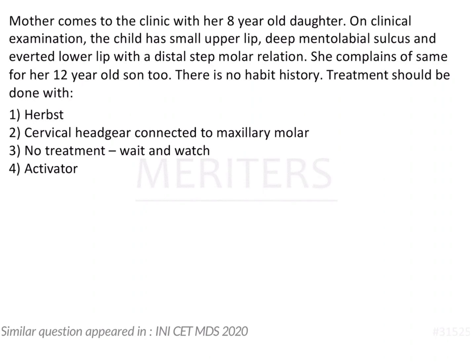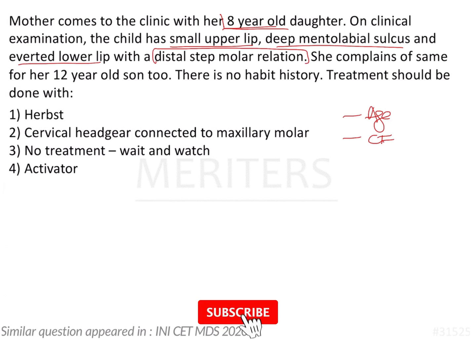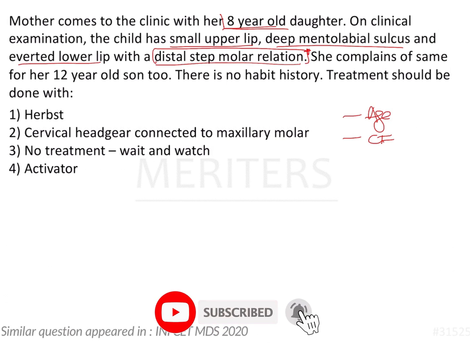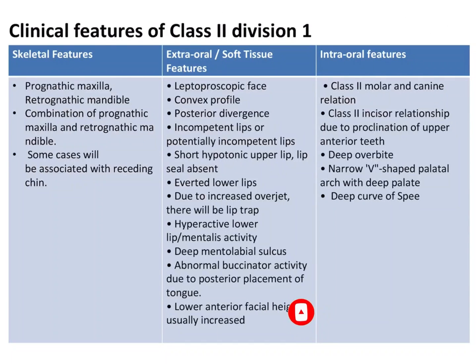Let us have a look at the clinical situation given here. So it's an eight-year-old child — the age of the child is important to note. The important clinical features are a small upper lip, deep mentolabial sulcus, averted lower lip, and her occlusal features show a distal step molar relation. On the basis of these features, we can identify that the patient has a Class II Division 1 type of malocclusion.